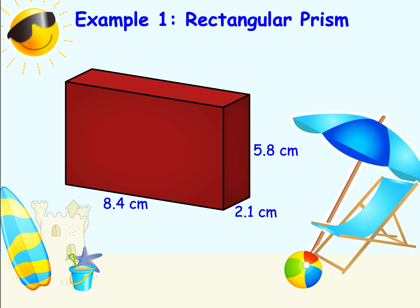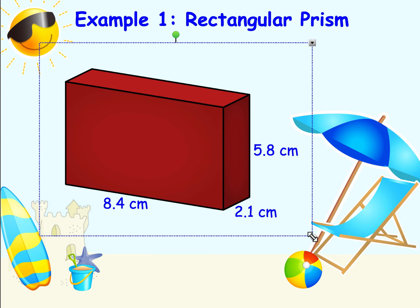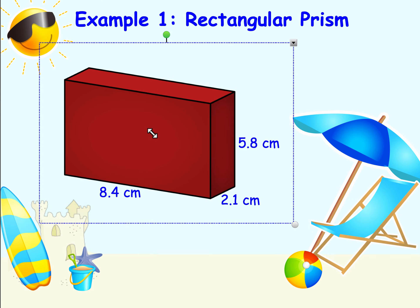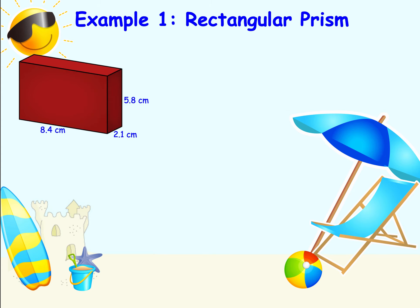Here we have a rectangular prism, and we're going to find its surface area. For the rectangular prism, I'm going to show you the second method — organized thinking without using the net. When you look at a rectangular prism, you're actually seeing three of the six faces. There are two of rectangle one, two of rectangle two, and two of rectangle three. So if we find the areas of those three rectangles and double them, we have all six.